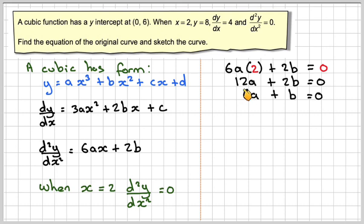We can divide both by 2 to get 6a plus b equals 0, and we'll call that equation 1 and come back to that later.